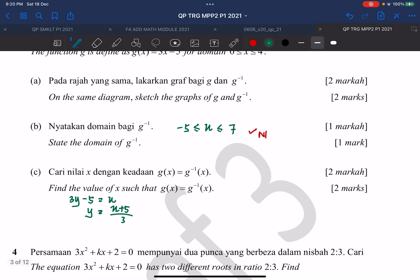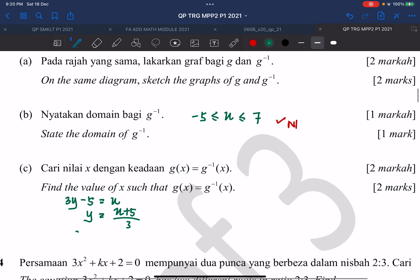So this is the same as your G inverse. So your G inverse x will be x plus 5 divided by 3. So your Gx is actually 3x minus 5 equals to your G inverse, which is x plus 5 over 3.